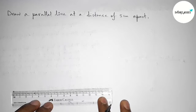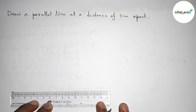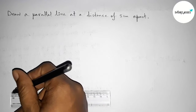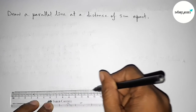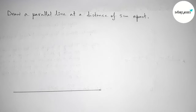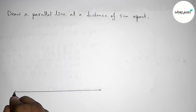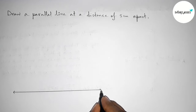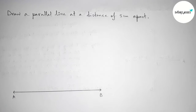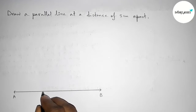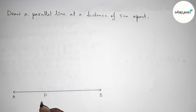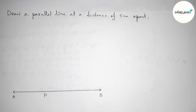First, with the help of a scale, we have to draw a line segment of any length. Taking arrow marks on both sides and labeling here A and here B. Next, taking a point on the line AB — taking point P here. You can take it anywhere on the line as your choice.